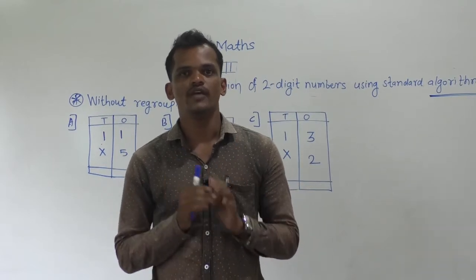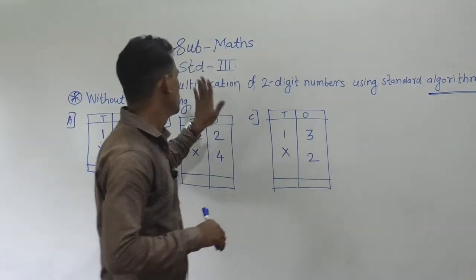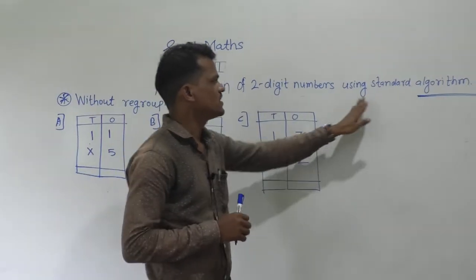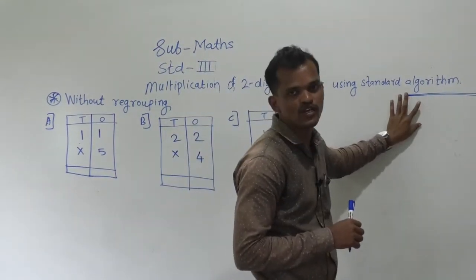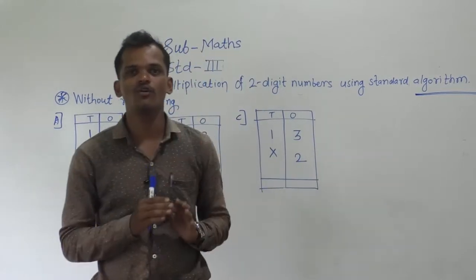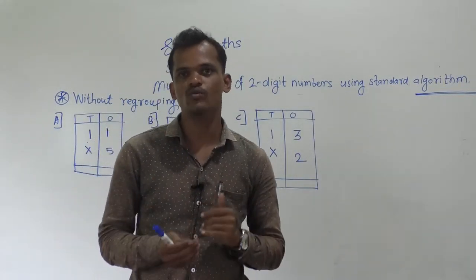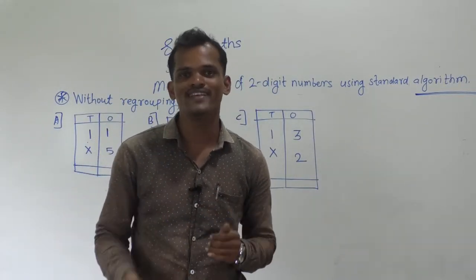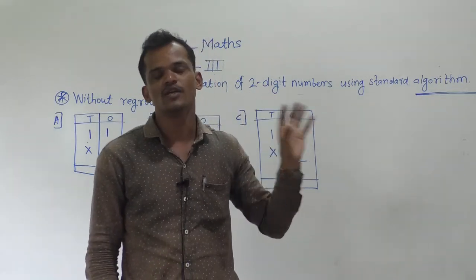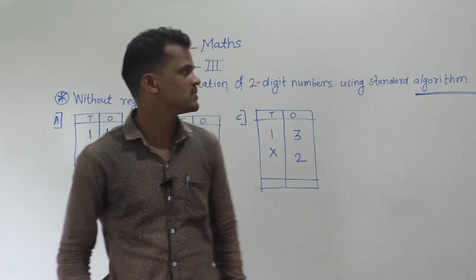Dear students, today we will see the multiplication of two-digit numbers using the standard algorithm. What is meant by algorithm? It is the set of rules that we have to follow to solve the examples. So, algorithm means a set of rules. Remember this.